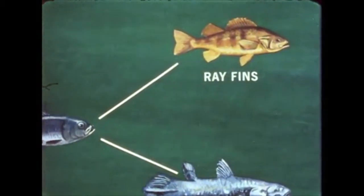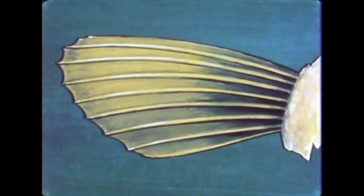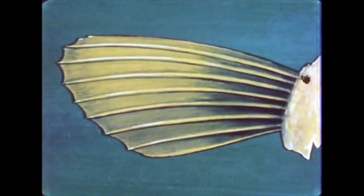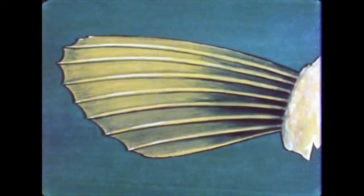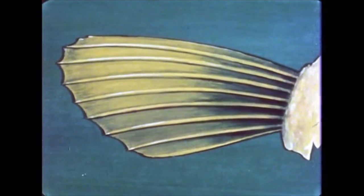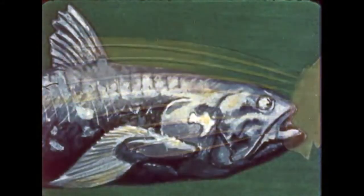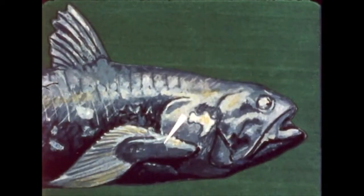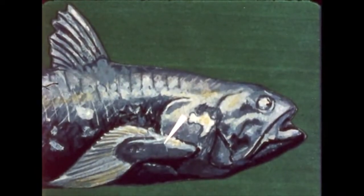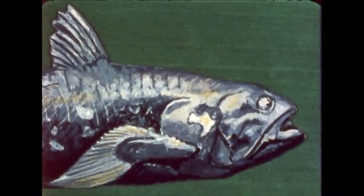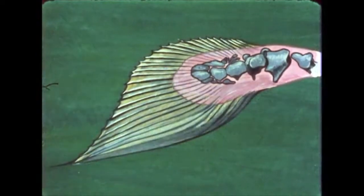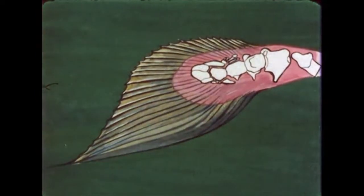In the ray fin fishes, the fins are composed of only a thin web of skin that is supported by rays. On the other hand, the lobe fins, like the coelacanth, have actual limbs. For they have a fleshy lobe supported by a skeleton of bone.